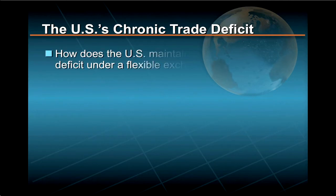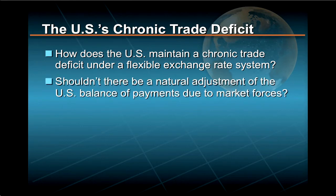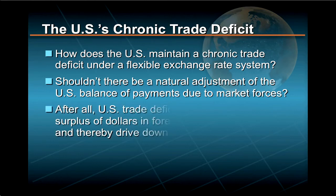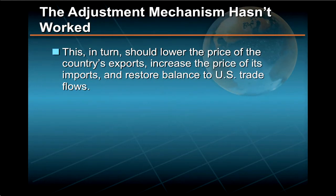Our next question is this: how does the United States maintain a chronic trade deficit, even though it operates under a largely flexible exchange rate system? Under such a system, shouldn't there be a natural adjustment of the U.S. balance of payments due to the forces of supply and demand? After all, U.S. trade deficits should lead to a surplus of dollars in foreign exchange markets and thereby drive down the dollar's value. This, in turn, should lower the price of the country's exports, increase the price of its imports, and restore balance to U.S. trade flows.